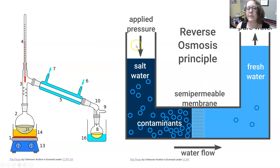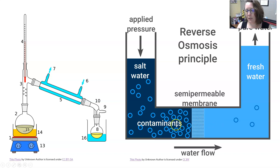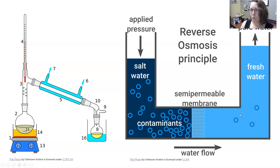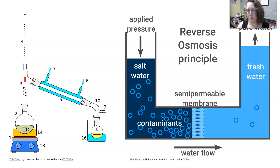In reverse osmosis, the principle is that water pressure is used to push water through a semi-permeable membrane to remove contaminants. The water flows in one direction — dirty water goes in and clean water comes out — using the water pressure already present in the pipe system to create the necessary pressure.